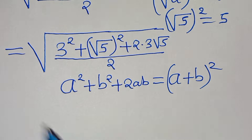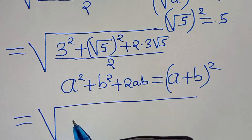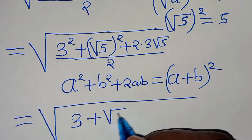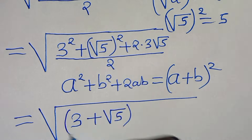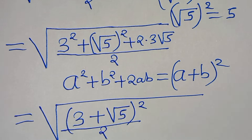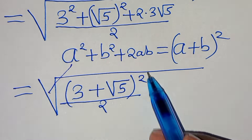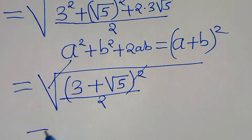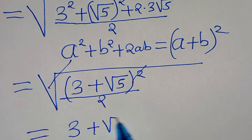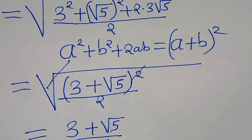Applying this identity, we have the square root of 3 plus square root of 5, raised to the power of 2, all divided by 2. We can eliminate the square root sign in the numerator, so that we have 3 plus square root of 5 in the numerator, divided by square root of 2.